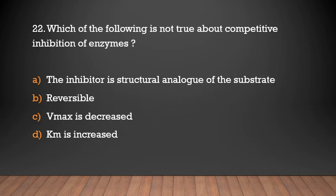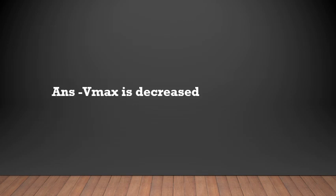Which of the following is not true about competitive inhibition of enzymes? Options: The inhibitor's structure is similar to the substrate; reversible; Vmax is decreased; Km is increased. Answer: Vmax is decreased — this statement is not true about competitive inhibition.